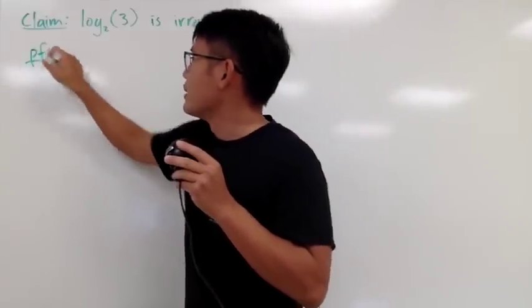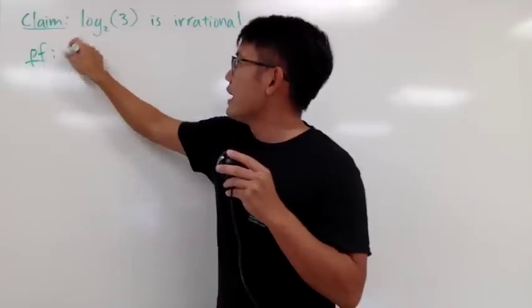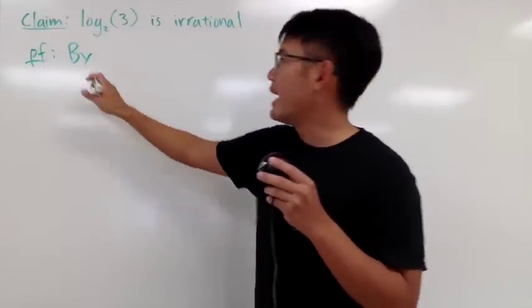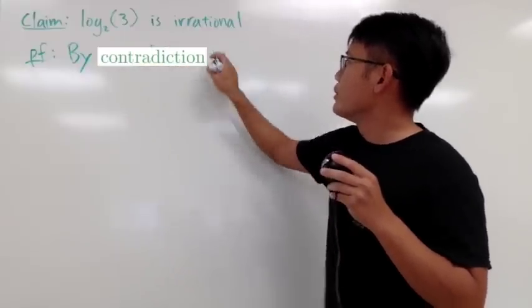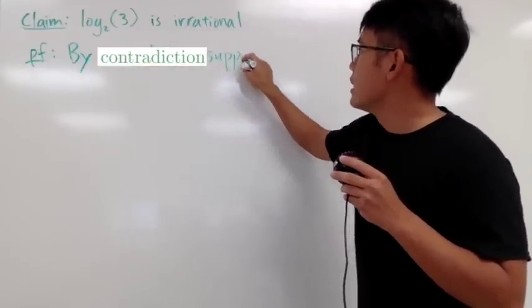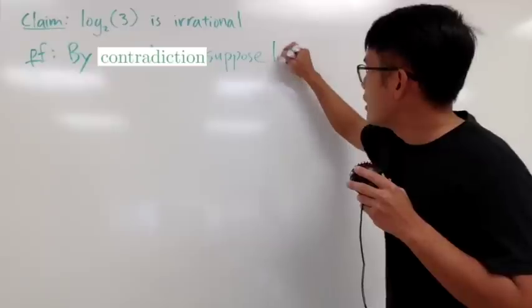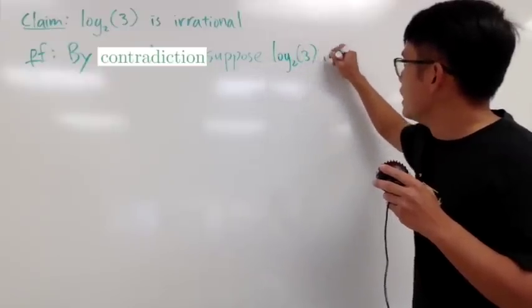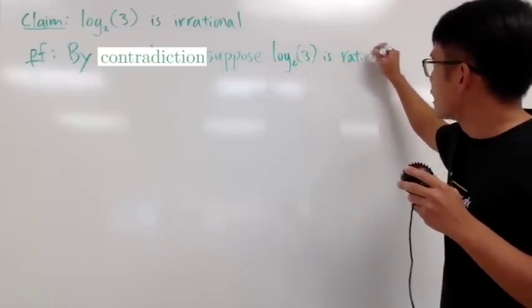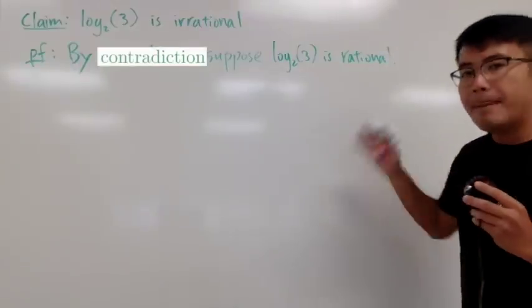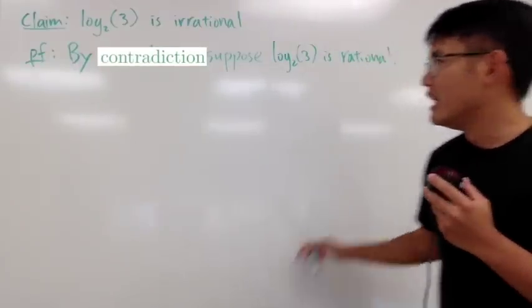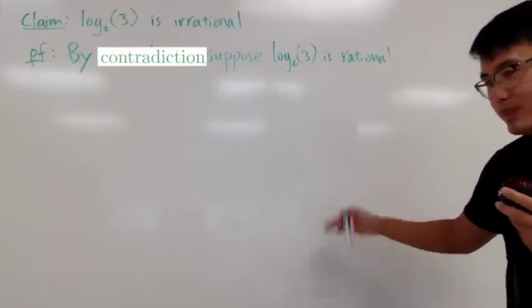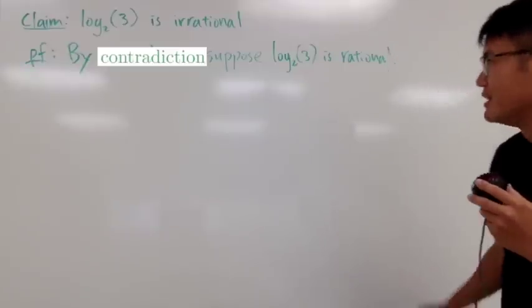So here we go. I will do contradiction for this. And let me just indicate the method we're using. So by contradiction. And we are going to first suppose that log base 2 of 3 is rational. And based on this assumption, we're trying to get something that doesn't make sense.